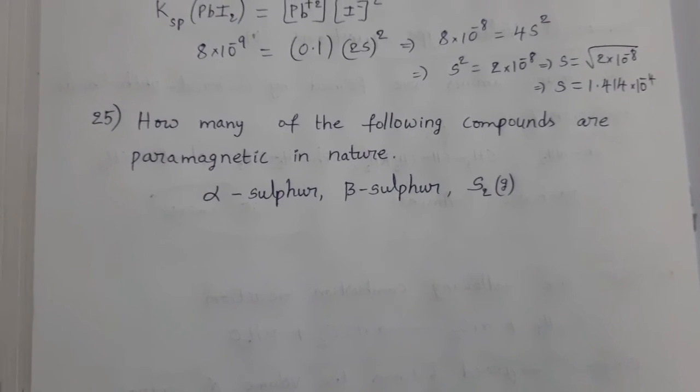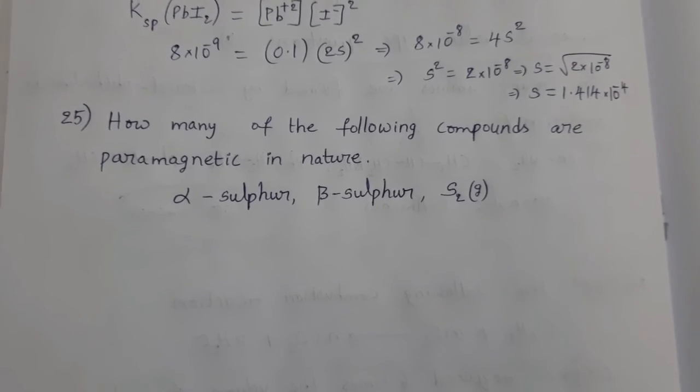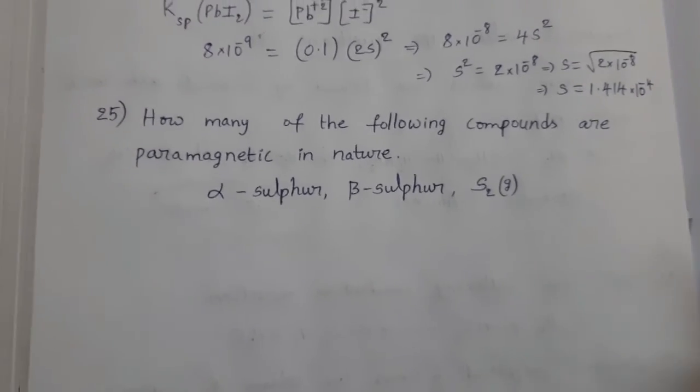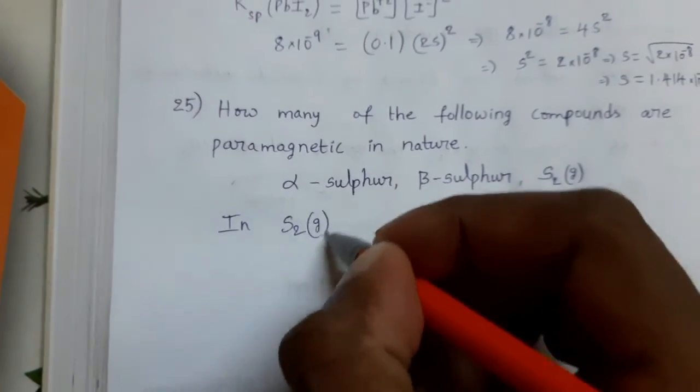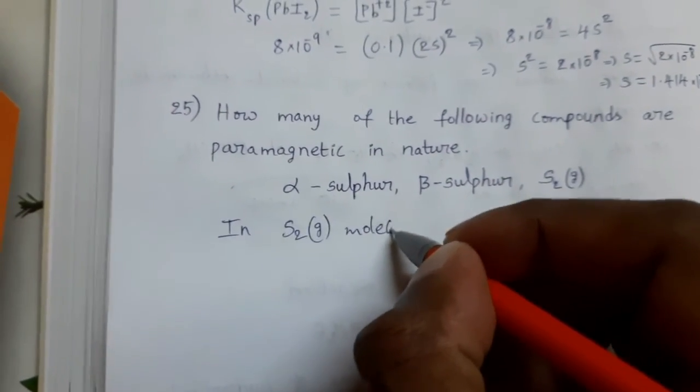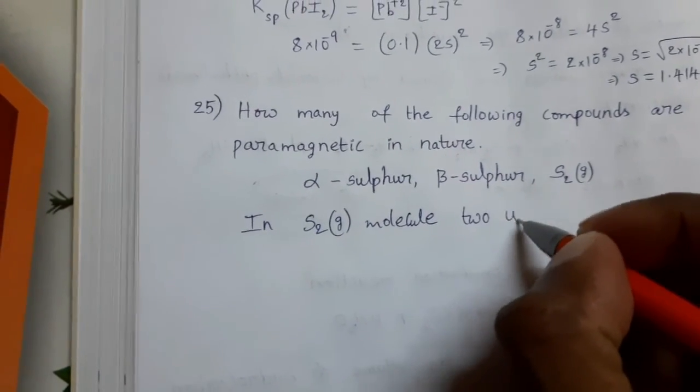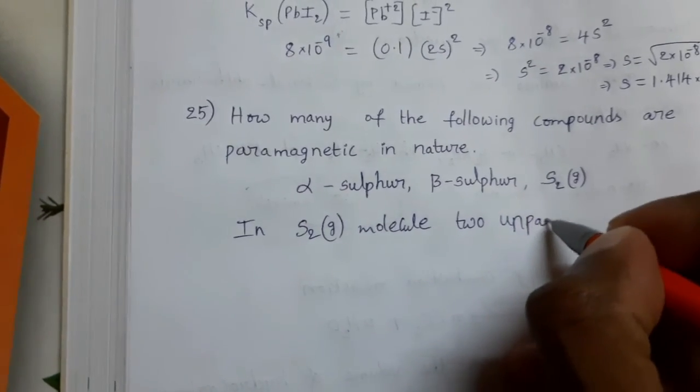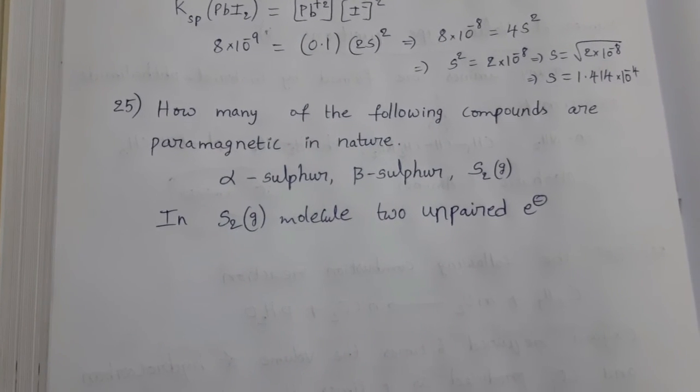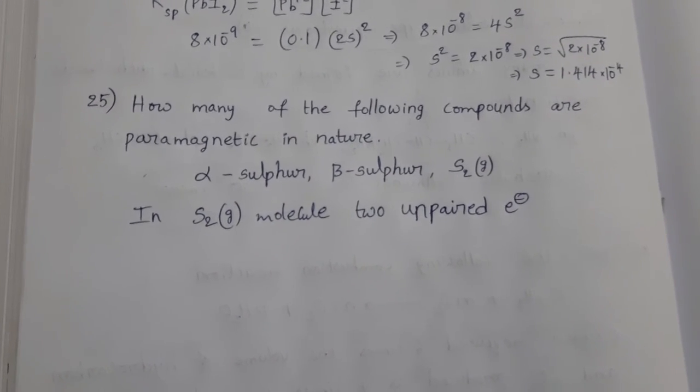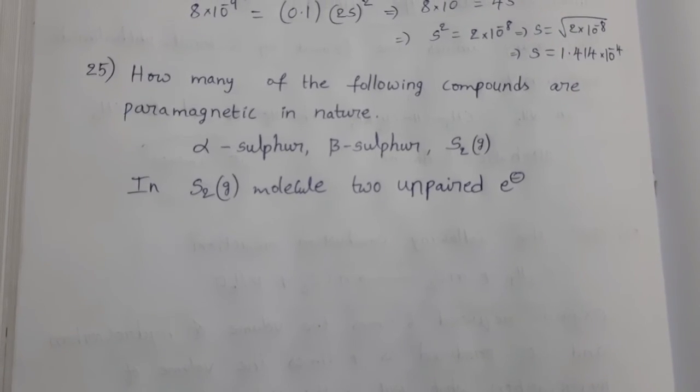Next, how many of the following compounds are paramagnetic in nature? Alpha sulfur, beta sulfur and S2. See this. Here, in S2 molecule in gaseous state, two unpaired electrons are there. Two unpaired electrons are present. That's why it shows paramagnetic nature. It is, this point is given in the NCERT text book in p-block elements. Thank you students.